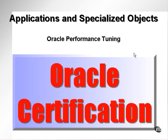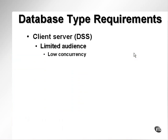This chapter deals with applications and specialized objects — the different types of special Oracle objects created to deal with different types of applications. In relation to an Oracle database, an application is a type of database. There are three types of databases I will deal with.